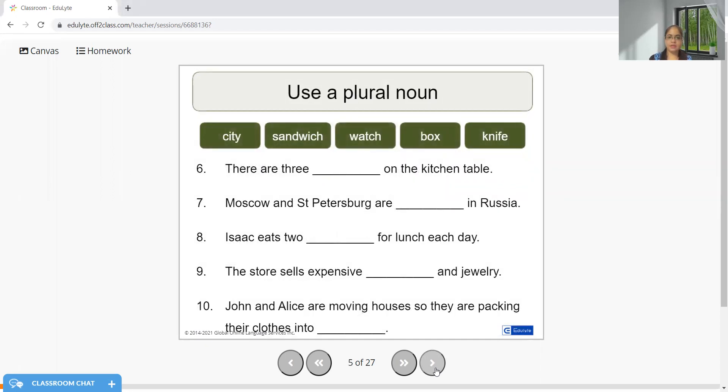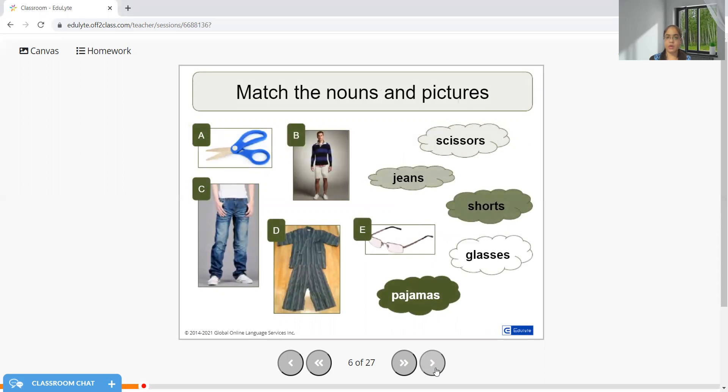There are three knives on the kitchen table. Moscow and St. Petersburg are cities in Russia. Isaac eats two sandwiches for lunch every day. The store sells expensive watches and jewelry. John and Alice are moving houses, so they are packing their clothes into the boxes.